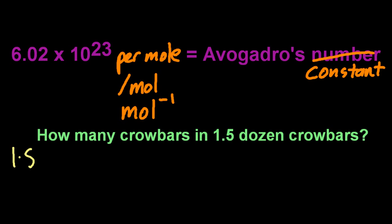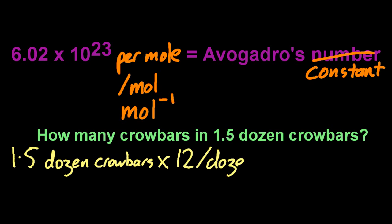For example, how many crowbars in one and a half dozen crowbars? Thank you, Gordon Freeman. Let's just write out the equation. So 12 per dozen. That's analogous to 6.02 times 10 to the 23 per mole.